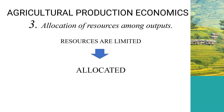The third concern is allocation of resources among outputs. Since labor, machinery, and time on each farm are very limited, they must be properly allocated to each crop and livestock activity in order to produce commodities consistent with the farmer's overall objectives.